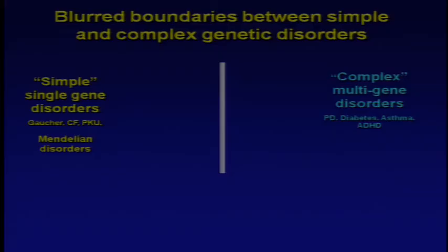Not too long ago we saw genetic disorders as divided into two major categories: those that were simple single gene disorders, things like Gaucher disease, cystic fibrosis, PKU, and disorders that we knew were genetic but considered to be complex multi-gene disorders like asthma, diabetes, ADHD, and Parkinson disease.